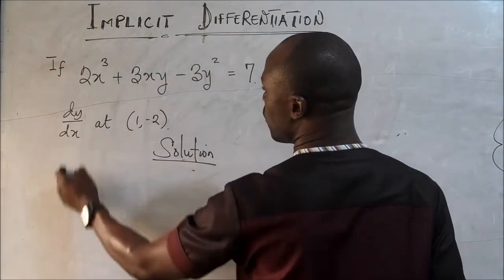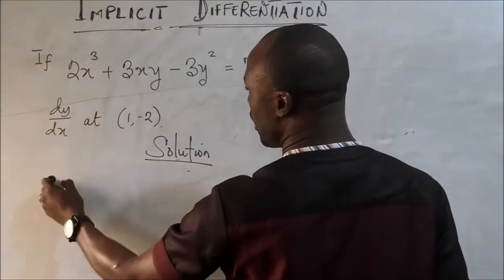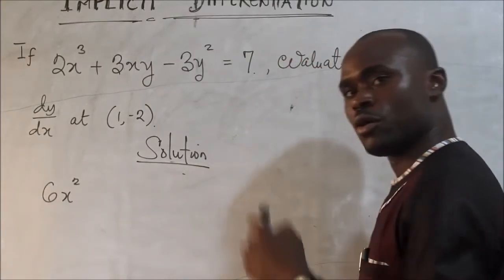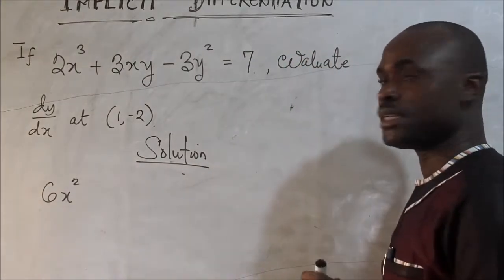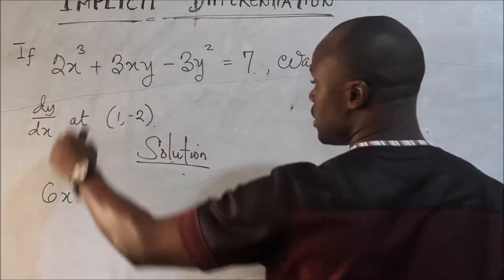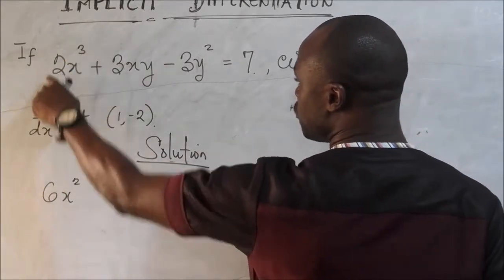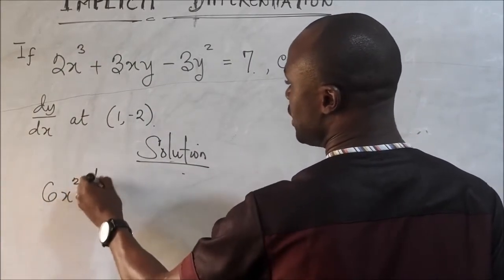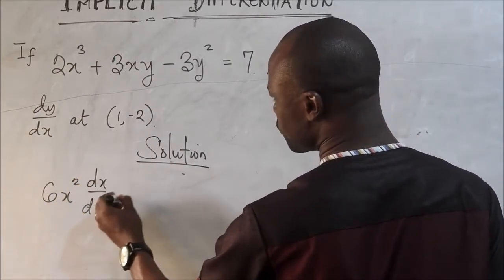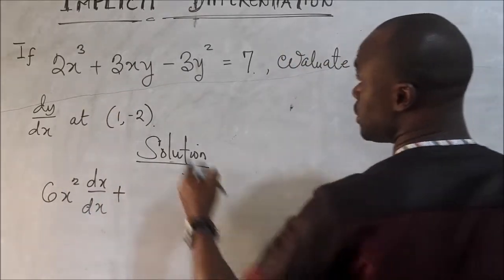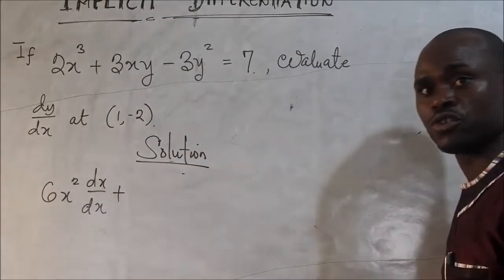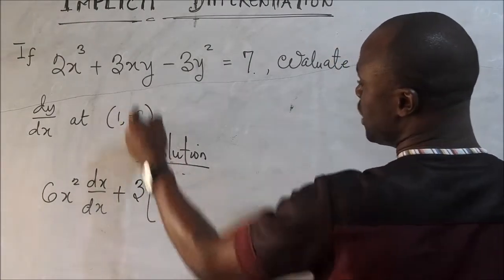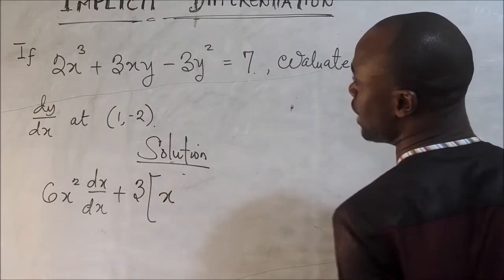If we differentiate this, we are going to have 6x squared. Please you can record the video on the polynomials. I explained that. So this is 6x squared. That's 3 times 2 and 3 minus 1 will give us this. We are going to write here dx dx plus this is a different key because we have product rule there. So we are going to treat that as a product.